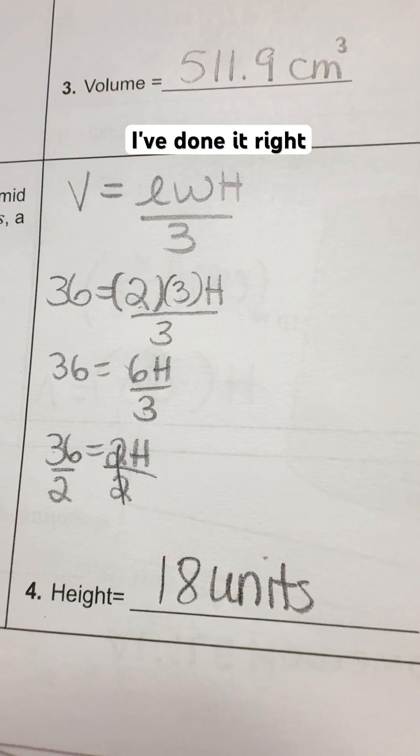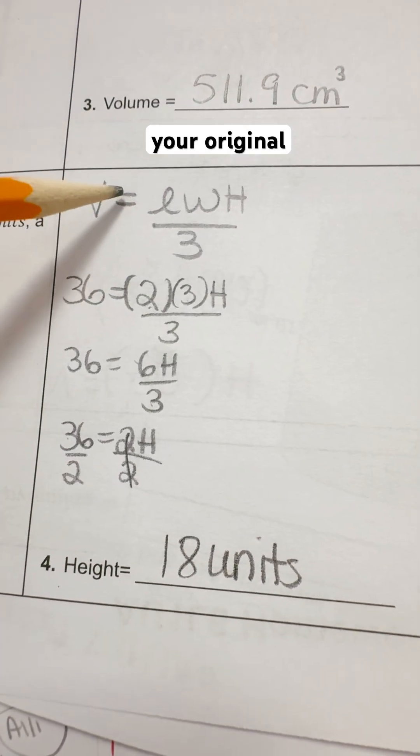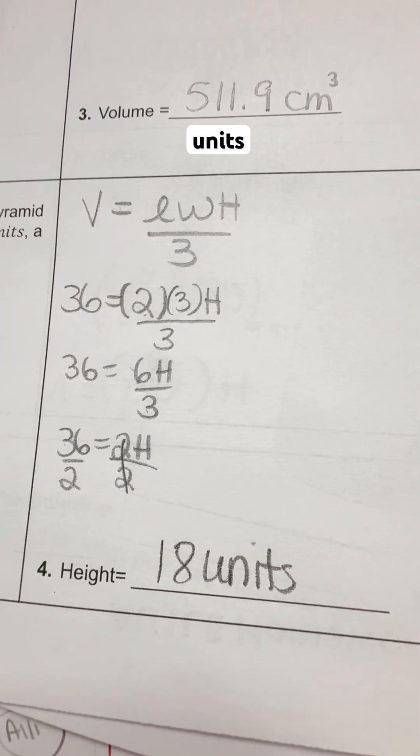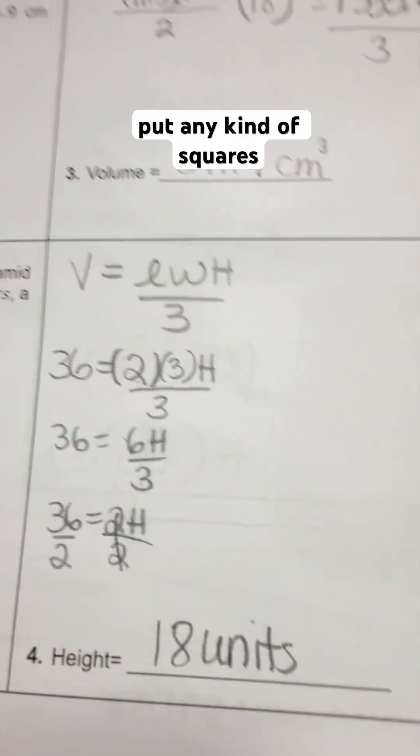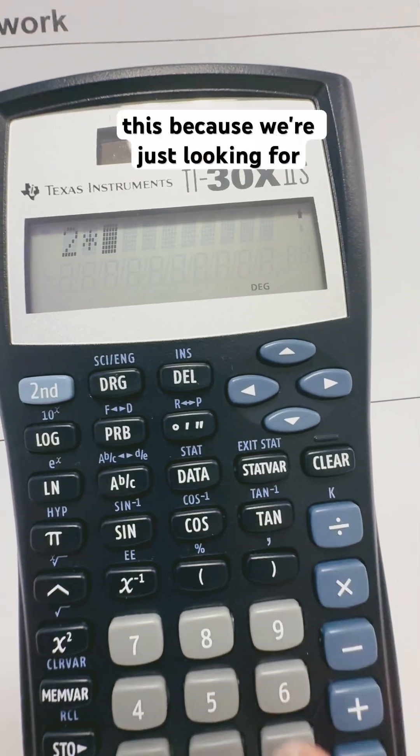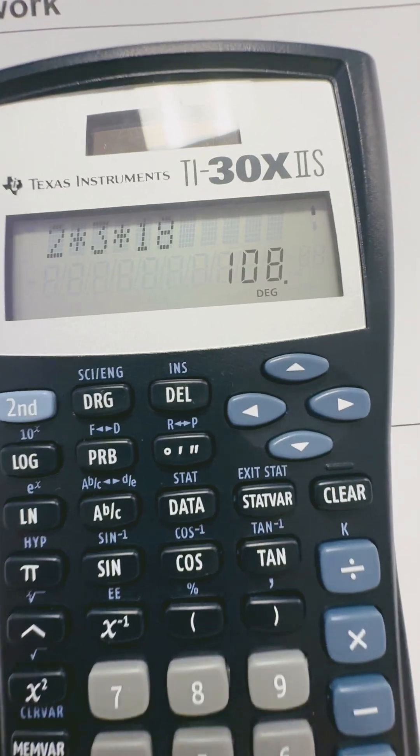And if I'm not sure if I've done it right, go back up and plug it into your original equation and make sure that it works. 2 times 3 times 18, we do that on the calculator. 2 times 3 times 18... 108.